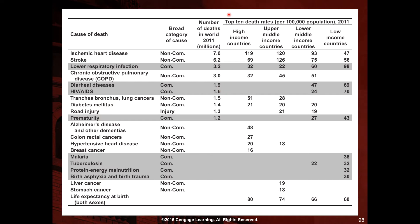The other columns show the top 10 death rates per 100,000 people for high-income countries, upper middle-income countries, lower middle-income countries, and low-income countries, presenting only the top 10 for each group.